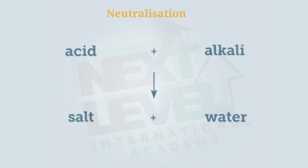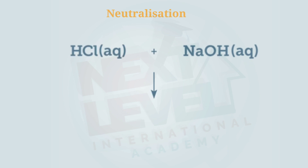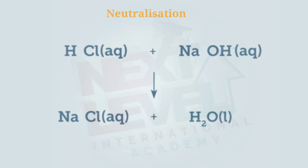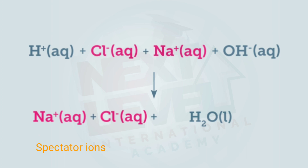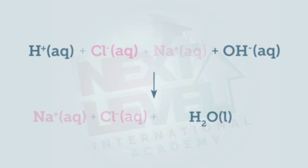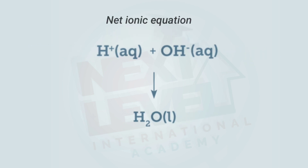The chemical reaction between acid and base is known as a neutralization reaction, producing salt and water. Compounds soluble in water like HCl, NaOH, and NaCl break down into free ions. Ions that are unchanged are called spectator ions — sodium and chloride are cancelled out from the equation. The net ionic equation is simply H⁺ + OH⁻ → H₂O.